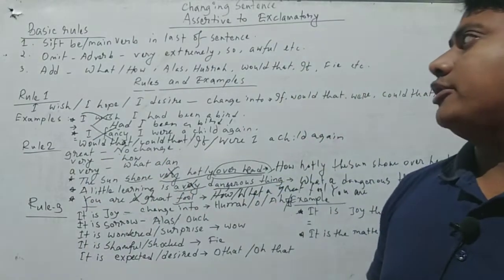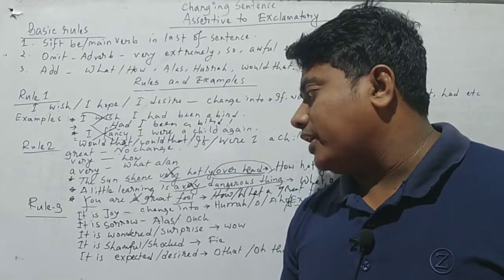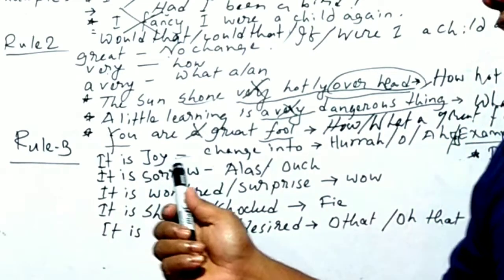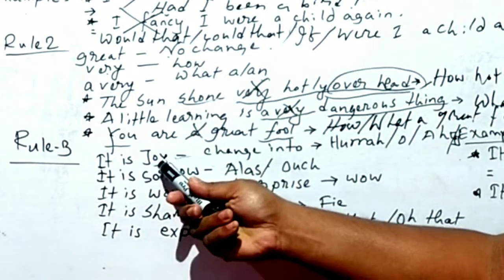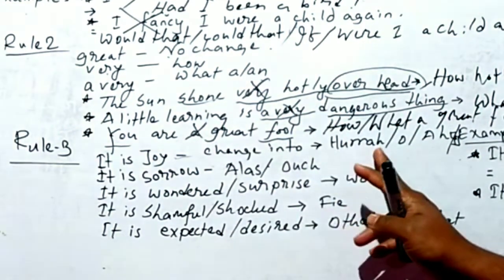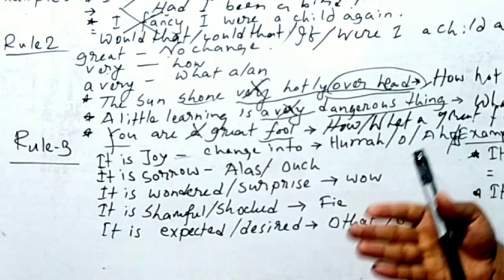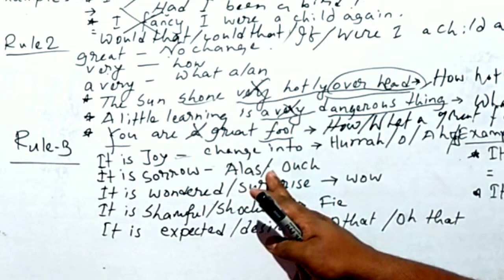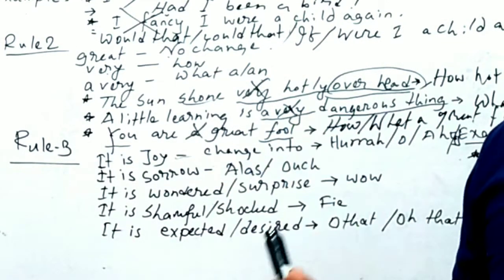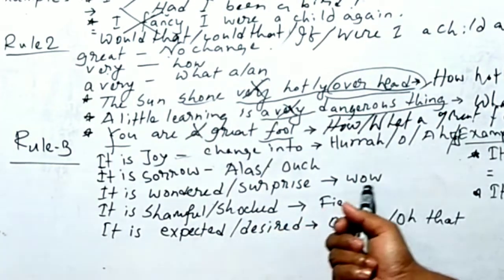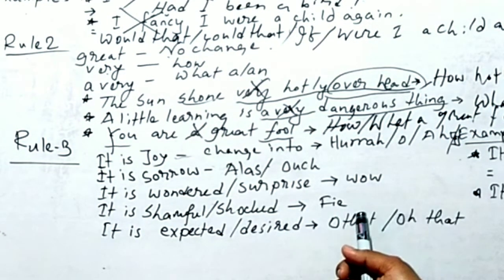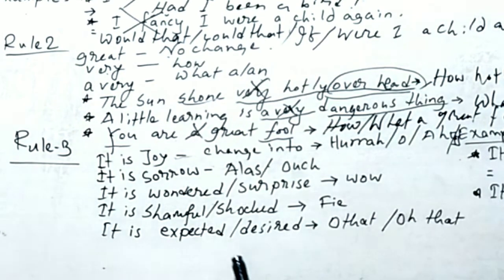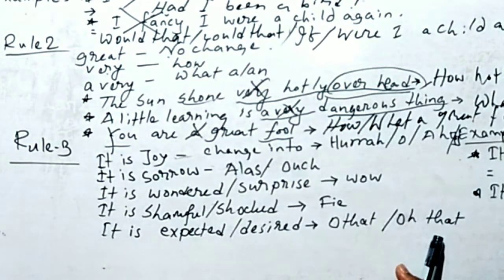Last rule — rule three. For changing assertive to exclamatory, some phrases and clauses we find have to change. 'It is joy' changes into 'hurrah' — joy indicates happiness. So 'it is joy' or 'it is a matter of joy' both change into 'hurrah,' 'oh,' or 'ah.' Then 'it is sorrow' or 'it is a matter of sorrow' changes into 'alas' or 'ach.' 'It is a matter of wonder' or 'it is a matter of surprise' both change into 'wow.' 'It is shameful' or 'it is shocking' both change and are replaced by 'phi.' Finally, 'it is expected' or 'it is desired' — we replace these with 'oh that' in the exclamatory sentence.